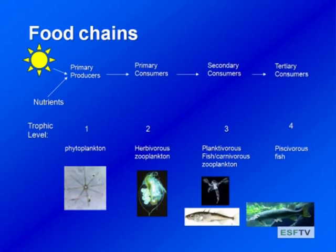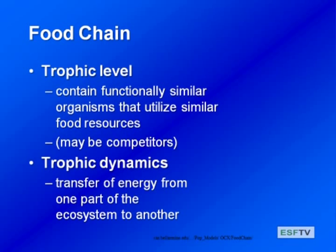These predators are consumed by other predators called tertiary consumers, at the fourth trophic level — something like a piscivorous fish. You might get even a top predator beyond that in some systems, and that would be trophic level five. Trophic levels can be formally defined as groups of functionally similar organisms that are basically consuming the same food resources.